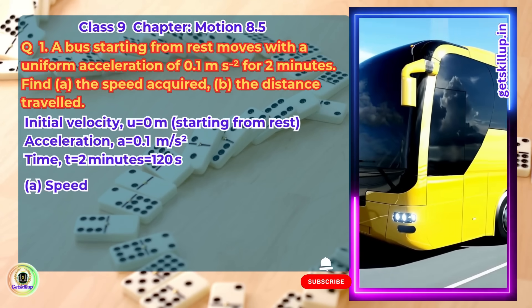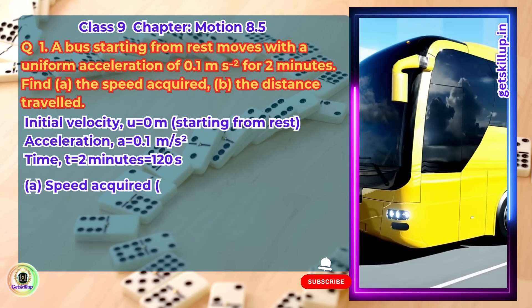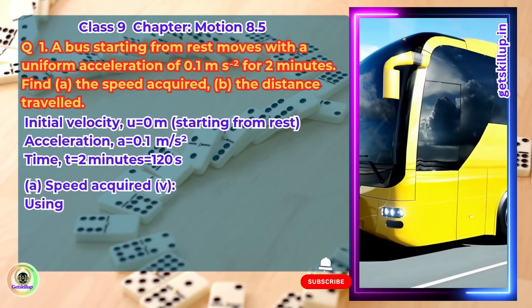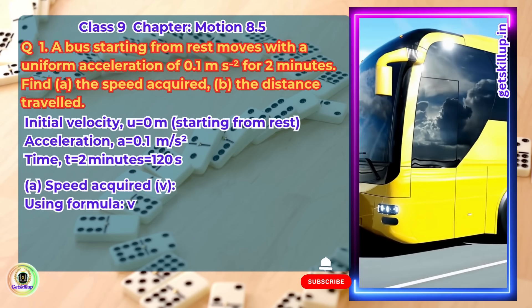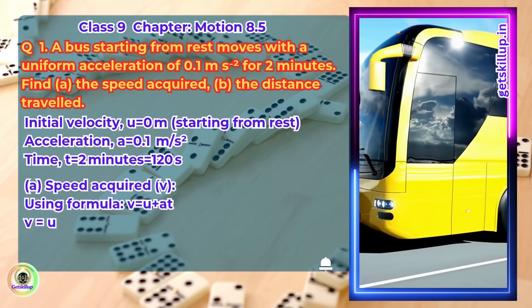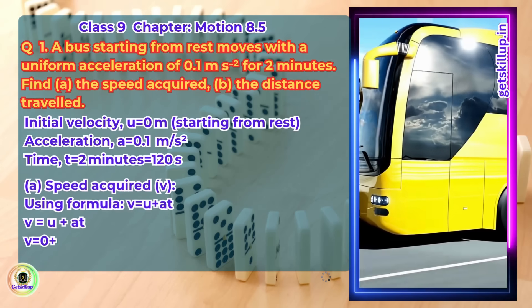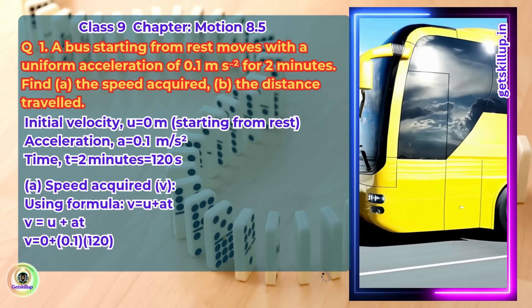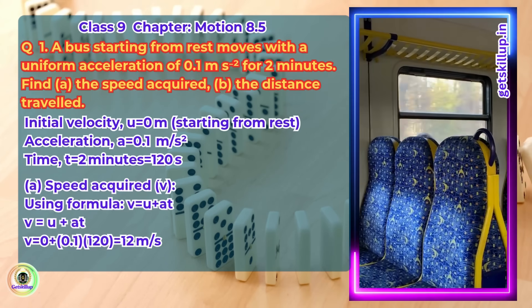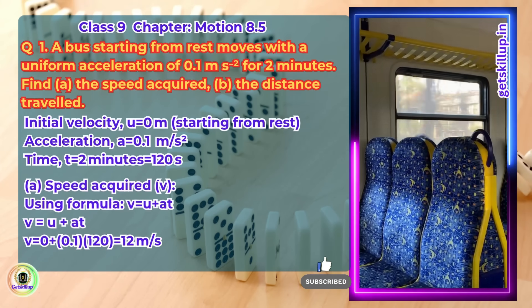Speed acquired v: using formula v equals u plus at, v equals 0 plus 0.1 into 120, which is equal to 12 meter per second.